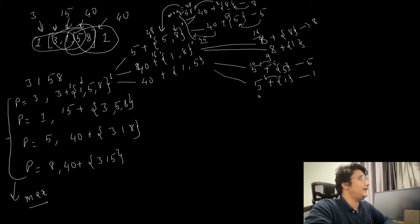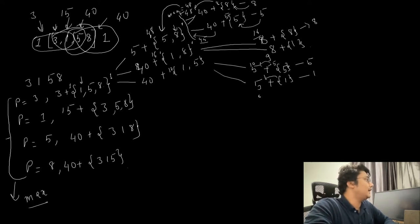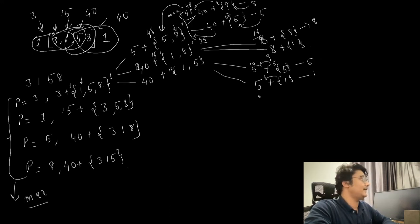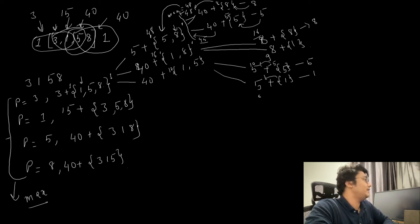Taking the max across the sub-calls: 5 plus 48 equals 53, 40 plus 16 equals 56, and 40 plus 10 equals 50. The maximum is 56, so this call returns 56.